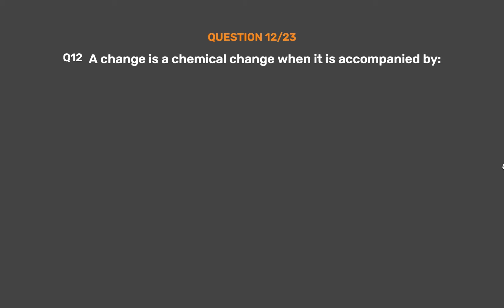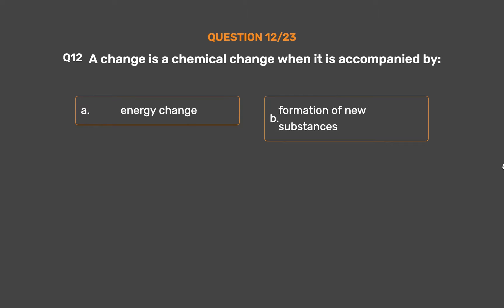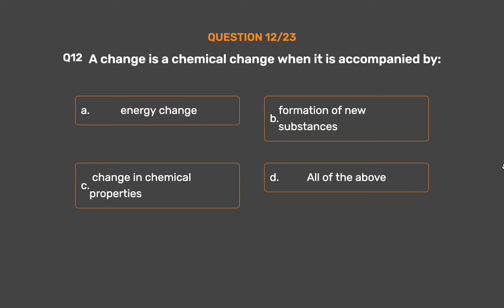Question number 12. A change is a chemical change when it is accompanied by — Option A: Energy change. Option B: Formation of new substances. Option C: Change in chemical properties. Option D: All of the above.